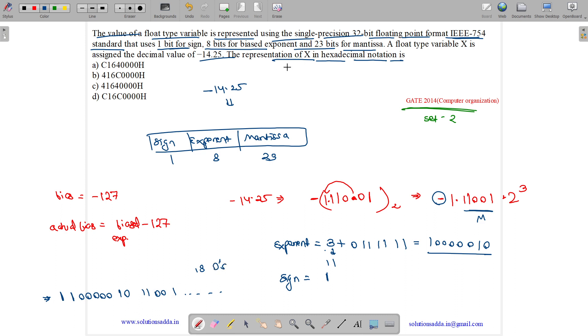So grouping. We need to tell the hexadecimal notation. Hexadecimal is a grouping of 4. So this is 1 grouping, this is 2nd grouping, this is 3rd grouping. Here we will have 4th grouping and so on. So this 1100 is our C.